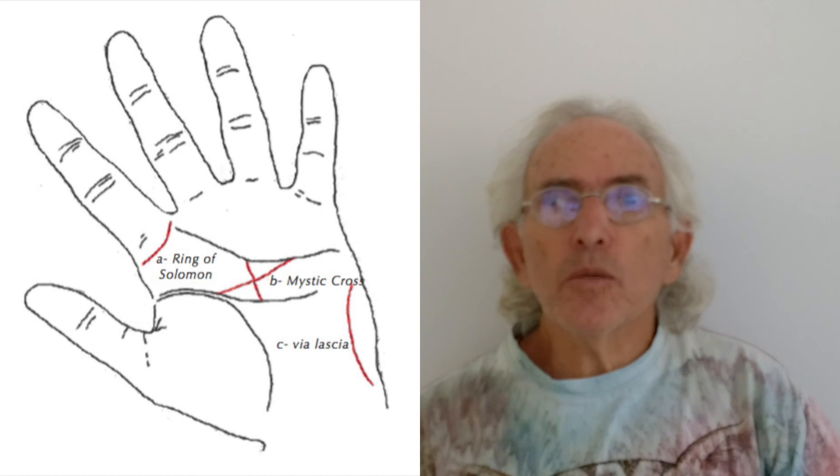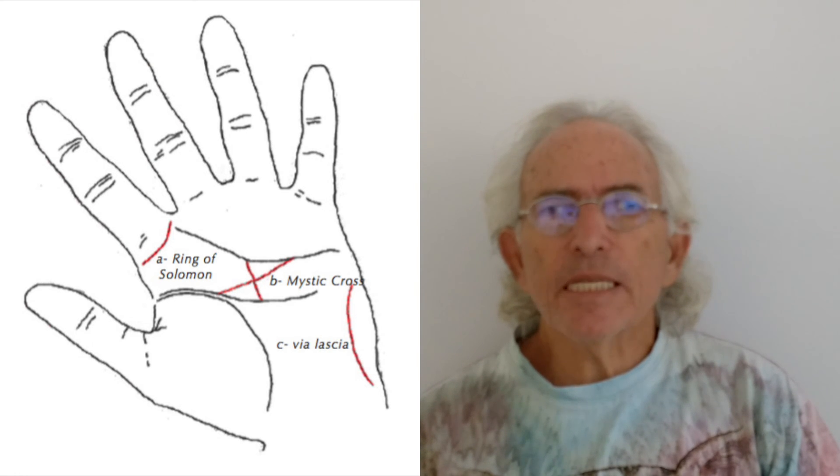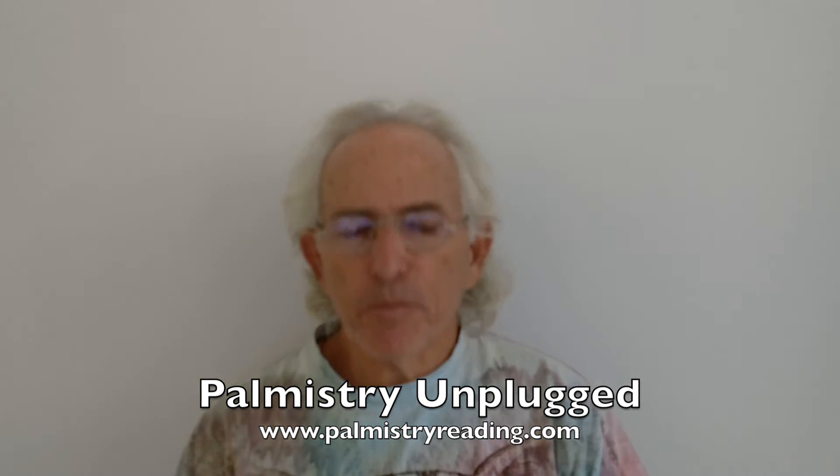And so the only thing about the Ring of Solomon is the person is not usually able to give good advice to themselves. They can see others, but for themselves it doesn't usually work. Okay, so I will end this now and we will get back into additional lines, special lines in the hand the next time. Okay, thank you very much. Bye. Thank you.